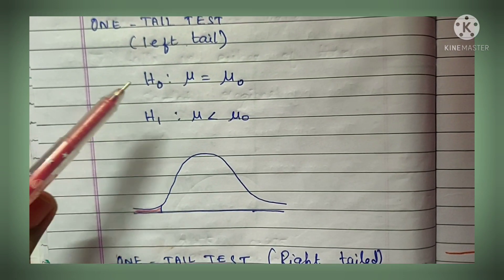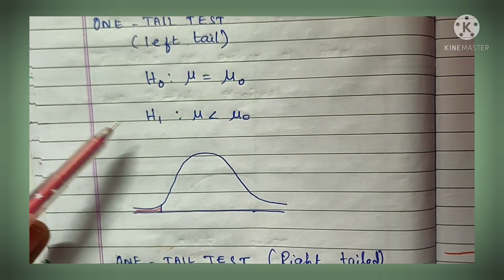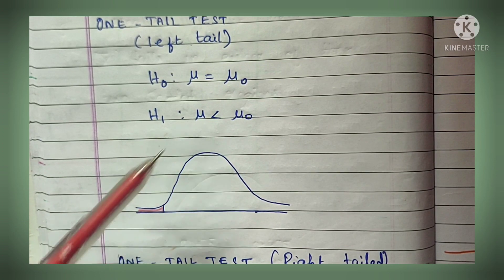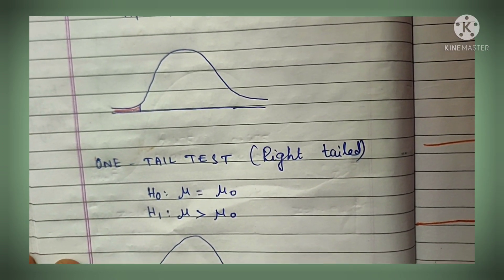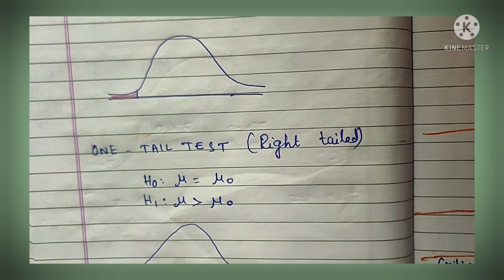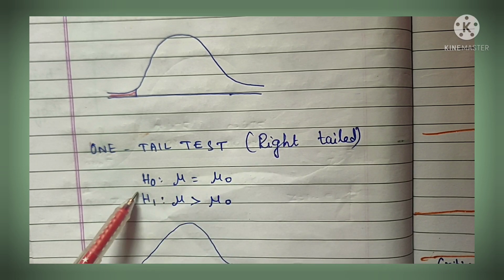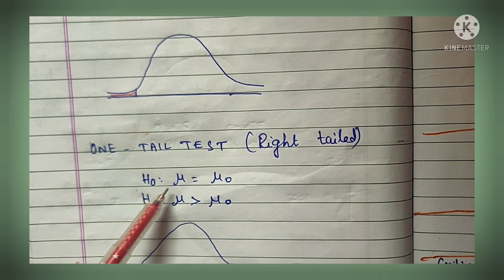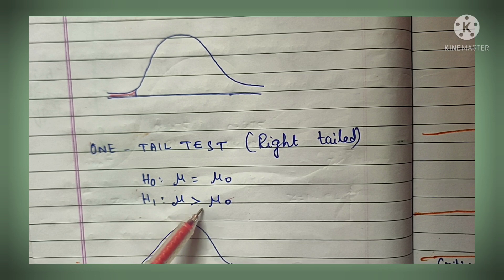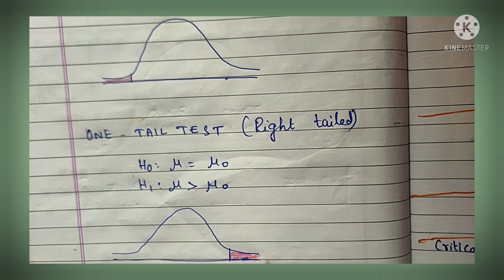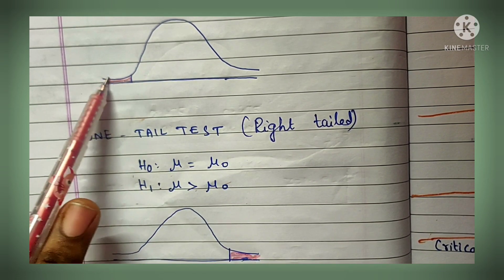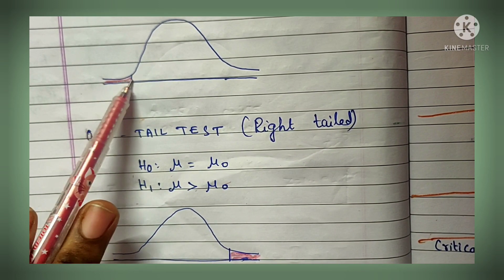For the one-tail right-sided test: H0: μ = μ0 and H1: μ > μ0 - that is the positive side, so the critical region comes under the right-hand side. The shaded portion represents the critical or rejection region.